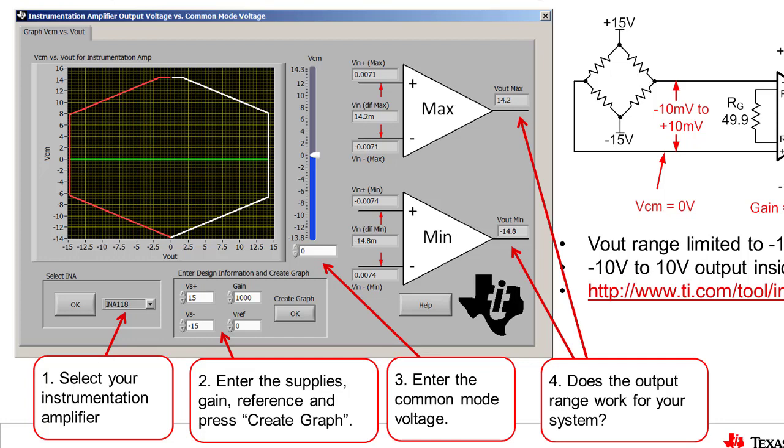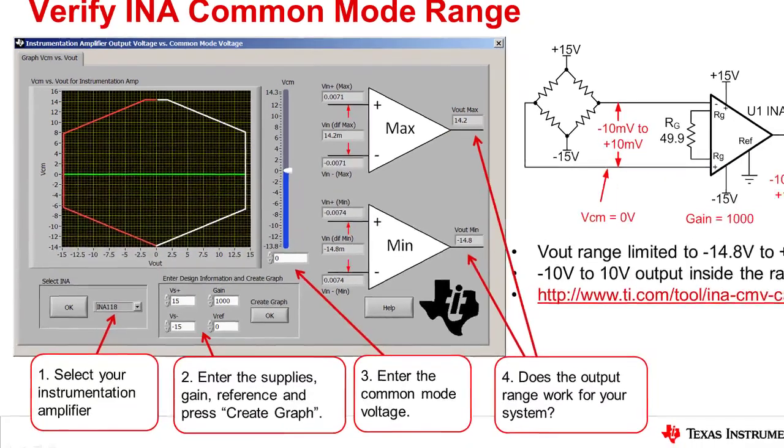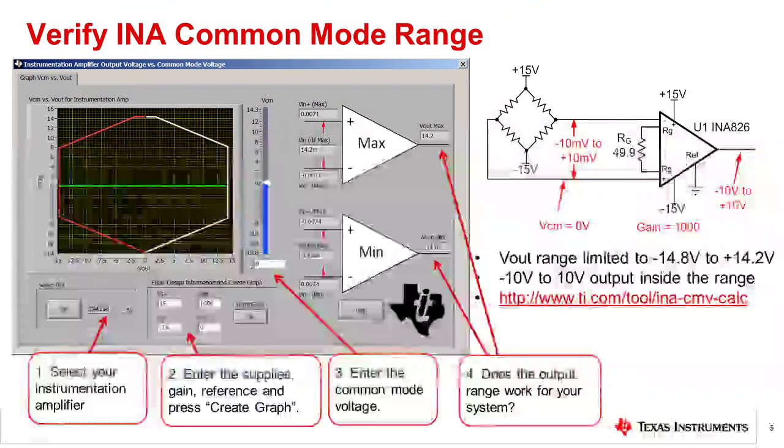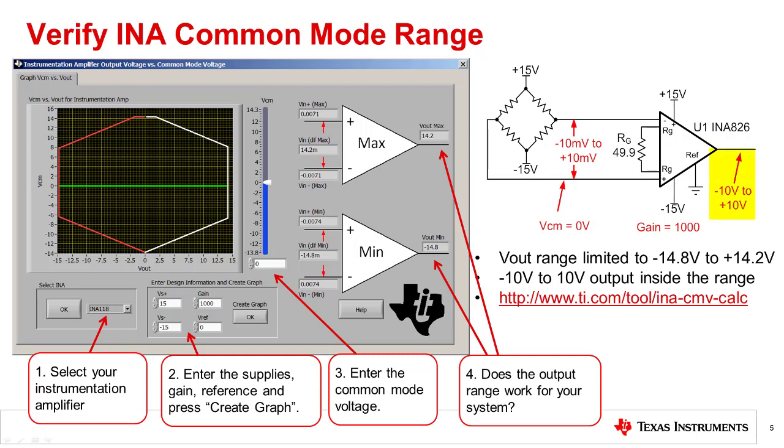The actual minimum and maximum output swing numbers are displayed at the output of the min and max amplifier symbols. In this case, the output swing is negative 14.8 volts to positive 14.2 volts. This proves that our design will not have an output swing limitation, as the output should range from negative 10 volts to positive 10 volts. It is highly recommended that you use this calculator after each INA design, as output swing limitations are the most common problem in INA circuits.